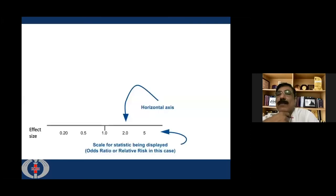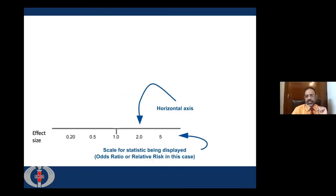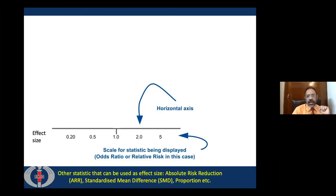Let us go into each component of a forest plot. The first thing is a horizontal axis at the bottom, which has the effect size or outcome effect. The effect size depends on the statistics used. If we are using comparative statistics, the most commonly used are odds ratio, relative risk, and hazard ratio. There could be other statistics such as absolute risk reduction, standardized mean difference, or proportion. We have to select studies which have used similar kinds of statistics.